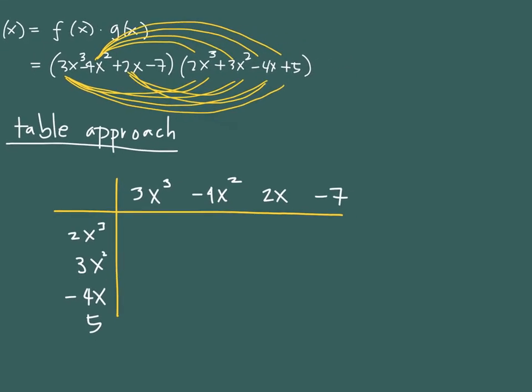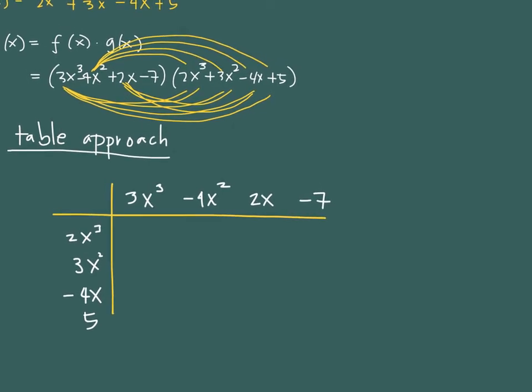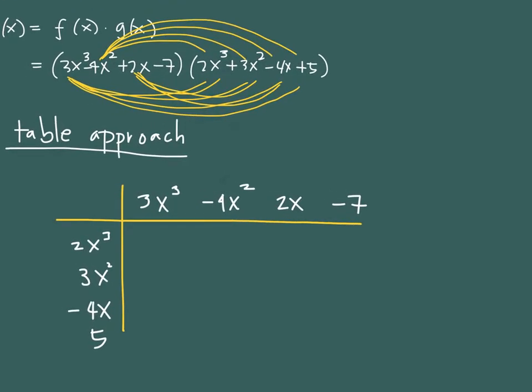So the idea of the table approach is the distribution that we have here, but we have organized it so that we could easily find the product of the pairs of expressions.